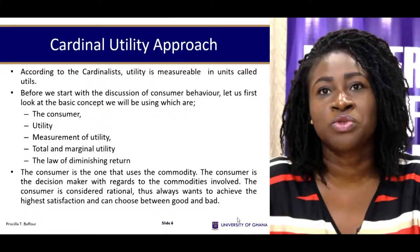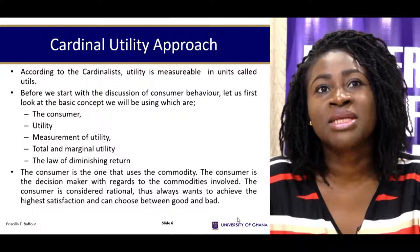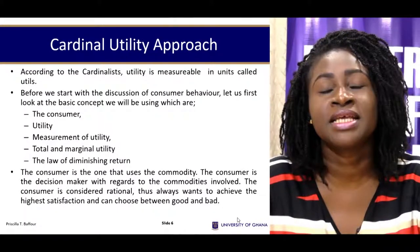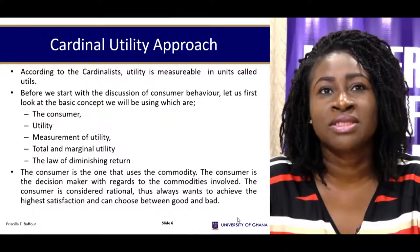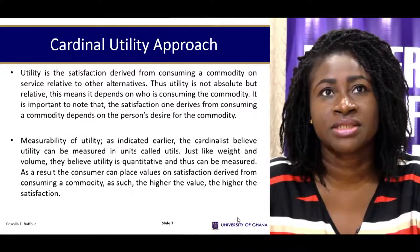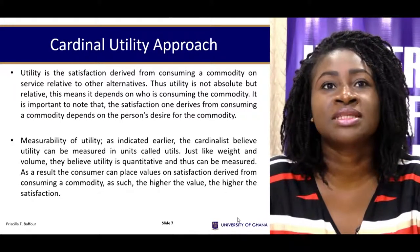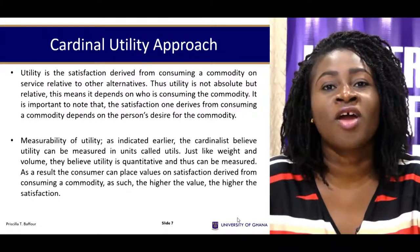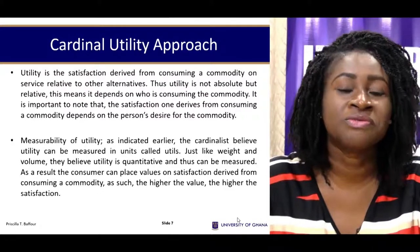Before we go on, we need to look at who the consumer is — who is the individual utilizing the products. In terms of utility, the measurement of utility is how people measure their utility. The cardinalists proposed that utility is measured in utils — we'll discuss how this comes about — and then we'll look at total utility, marginal utility, and the law of diminishing returns. The cardinalists believe you can measure utility in utils, just like weight or volume; utility can be given a quantitative measure. So if you consume a bowl of rice compared to a bowl of kenkey, you can tell us that you derive 10 utils from rice and 8 utils from kenkey.